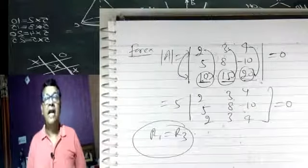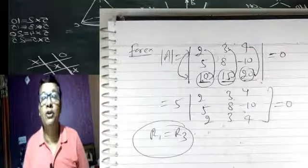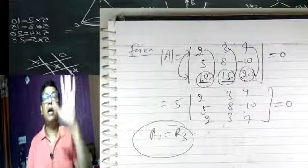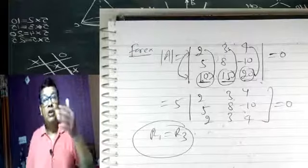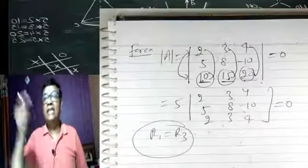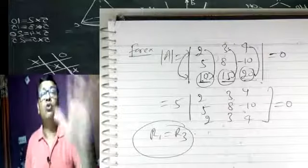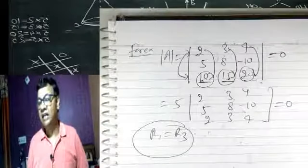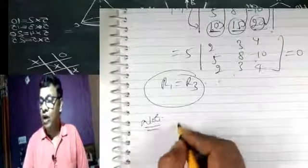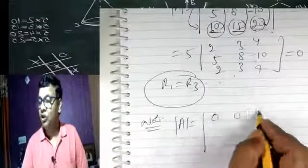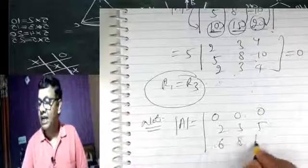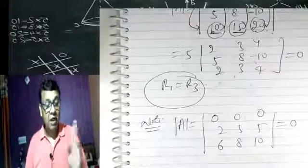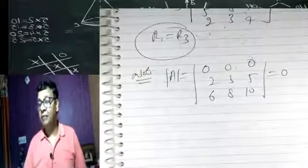Samajh gaye? Very good. Agar 2 row ya 2 column equal ho jaayein toh determinant 0. Aur proportional ho jaayein — same ratio mein — tab bhi 0. Ek aur note: koi bhi ek row ya column ke saare elements 0 ho jaayein — jaise [0, 0, 0] row — toh bhi determinant ka value hamesha 0 hoga. Yeh saara kaam hum aage karenge.